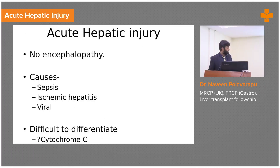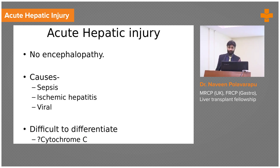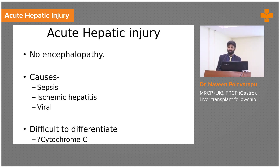I purposely put this slide here because I want you to understand the difference between acute liver failure and acute hepatic injury. I'm sure you have seen cases in the ward with ALT and ASTs in the thousands. So after we get a referral saying this patient has got ALT of 2000, AST of 3000, and there's worry about whether this patient is in liver failure — how do you differentiate? Is it an acute hepatic injury or is it acute liver failure?